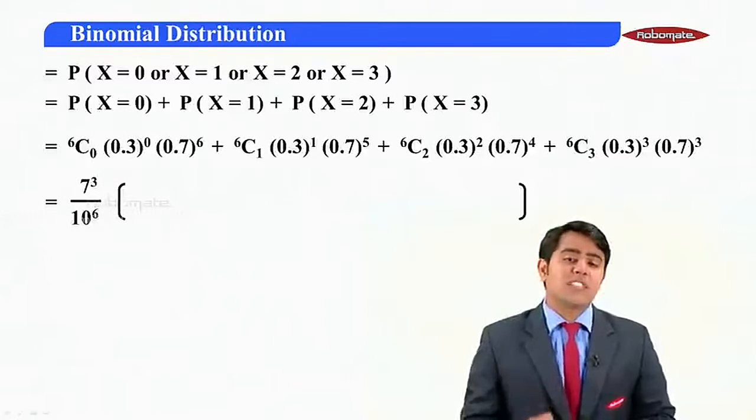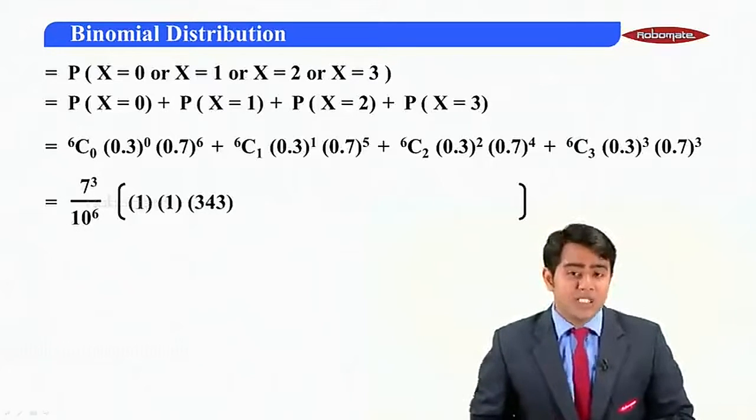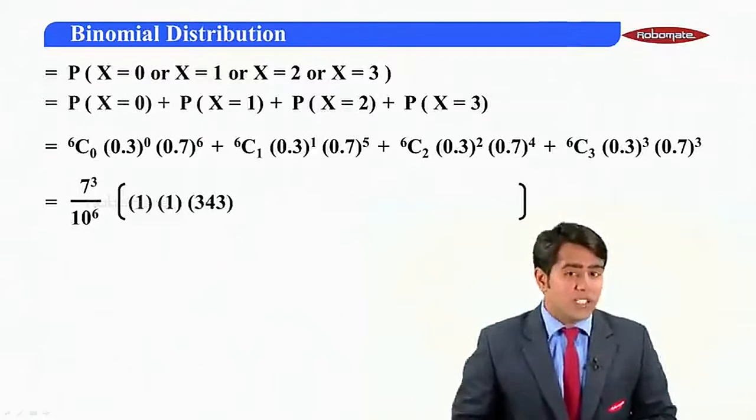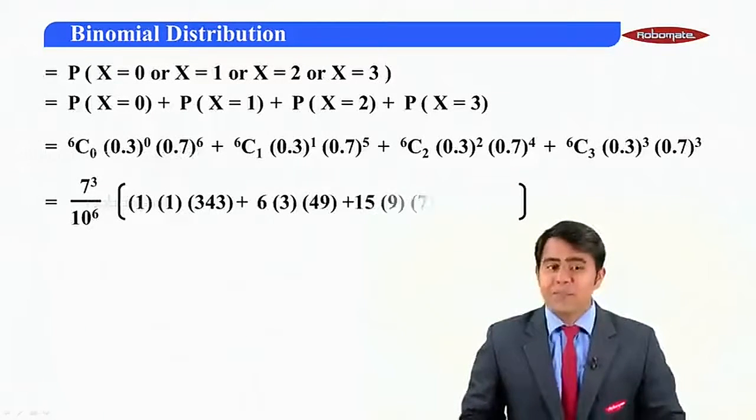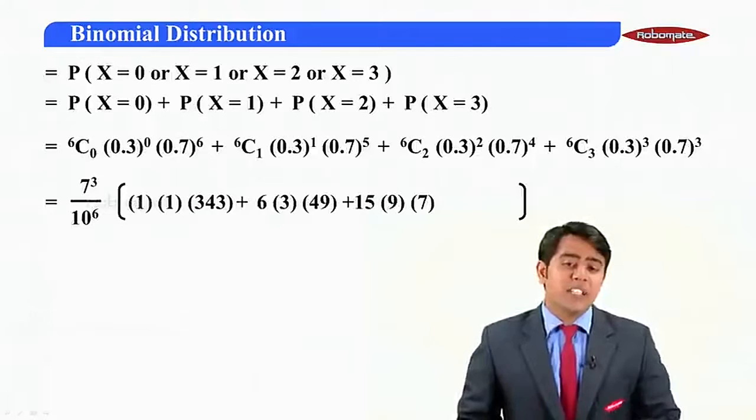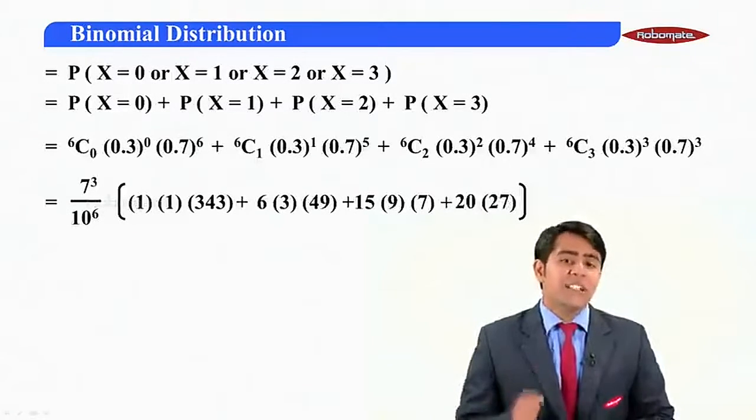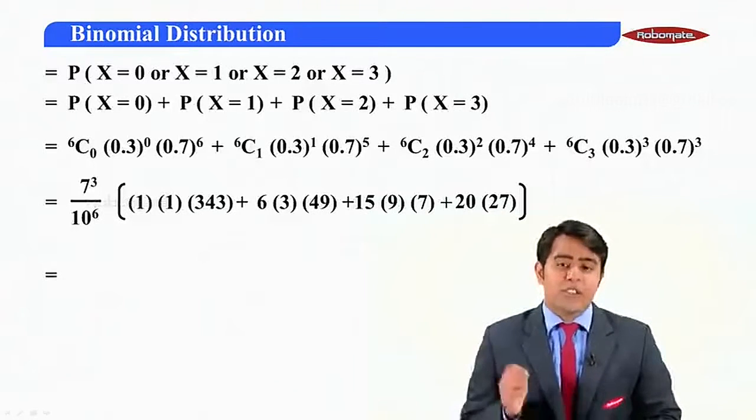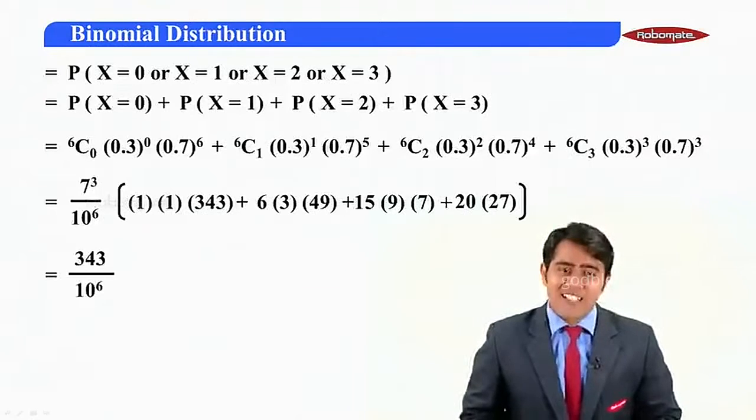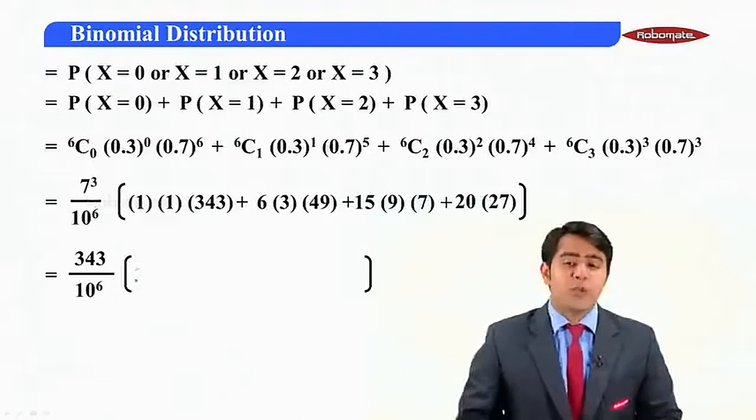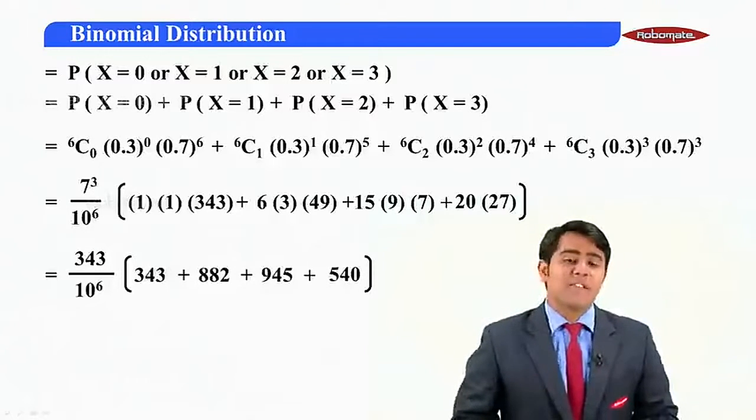So 7^3 upon 10^6 is taken outside. The remaining terms will now be 6C0 which is 1 into 0.3^0 is 1 and 7^3 will be left which is 343. After that, the next terms will be 6(3)(49) + 15(9)(7) + 20(27). So when I solve these values, I get the value as (343/10^6)(343 + 882 + 945 + 540).